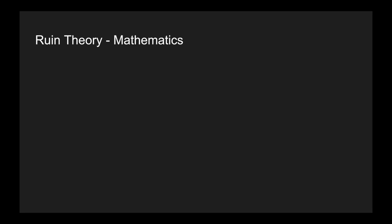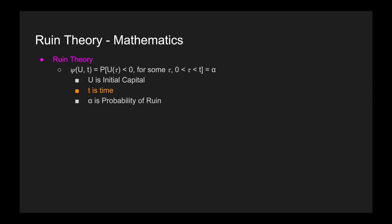Now let's look at the mathematics. With ruin theory, we have a function with two parameters: U, our initial capital, and T, which is time. This function gives the probability that capital goes below zero for some given time period, and it is equal to alpha. So alpha is our probability of ruin. We then have capital — the blue bar in our picture — and it is given by the following formula.